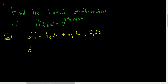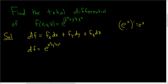So in this case it's pretty easy. df is equal to: the partial derivative of f with respect to x — the derivative of e to the x is just e to the x — so here it'll be e to the x squared plus y squared plus z squared, times the derivative of the inside. We're taking a partial with respect to x, so we treat y and z as constant, so we just get 2x.